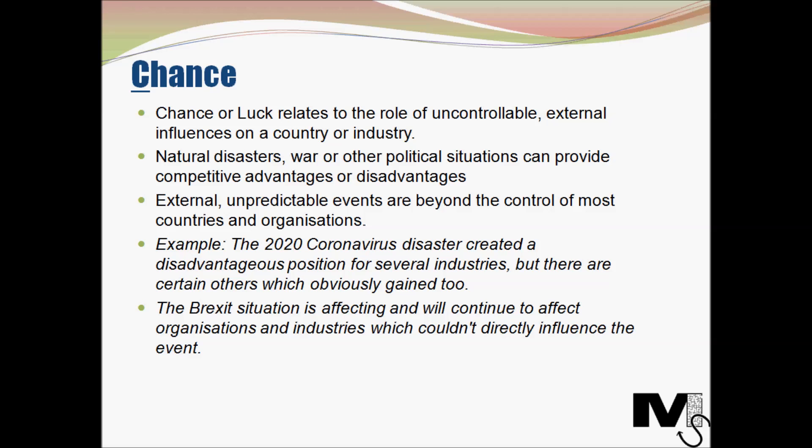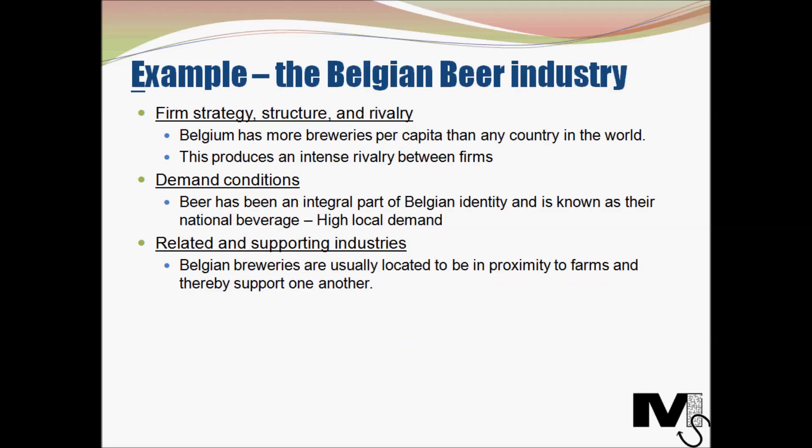For example, the 2020 coronavirus pandemic created a disadvantageous position for industries like leisure, hospitality, and travel, but benefited industries supplying masks, pharmaceuticals, and drugs. The Brexit situation is another example — it affected and will continue to affect many organizations and industries that couldn't directly influence the event.